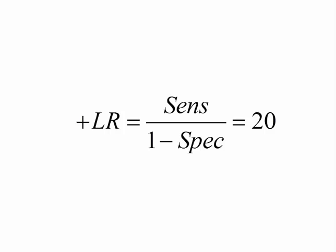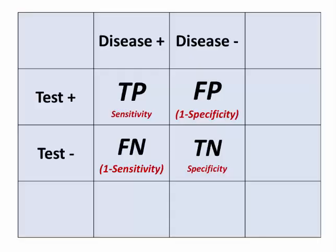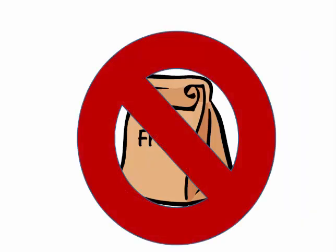If you're having trouble understanding this content, it always makes sense to go back to the 2x2 table and think about true positives, true negatives, false negatives, and false positives, and put things in context. Of course, there are always the usual cautions — no free lunch with SPIN and SNOUT either. Remember, SPIN and SNOUT are based on sensitivity and specificity.